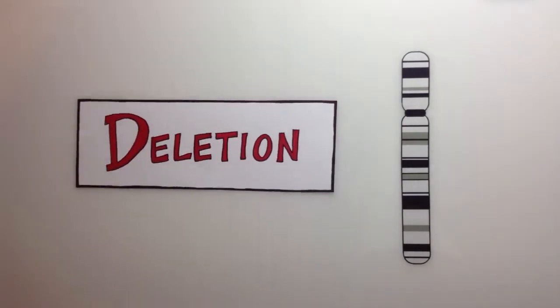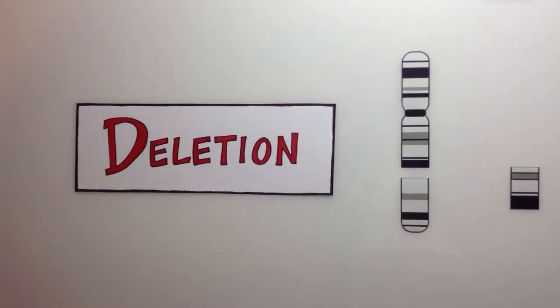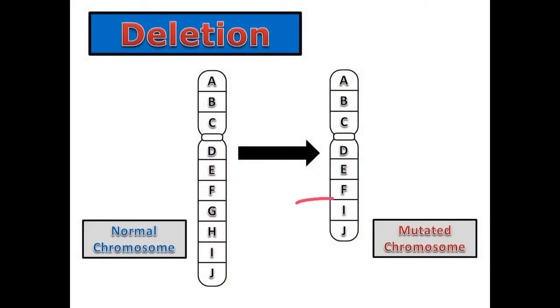During a deletion, a section of the chromosome is accidentally lost. As a result of this deletion, the mutated chromosome is missing genetic information, making it much shorter than it should be.